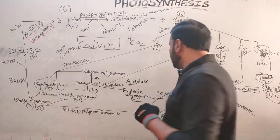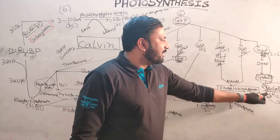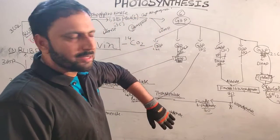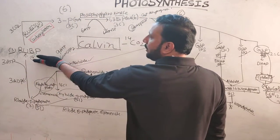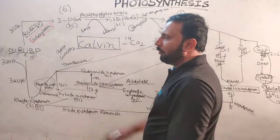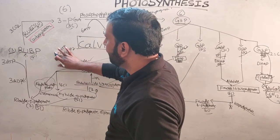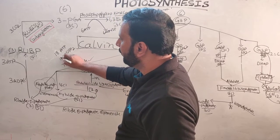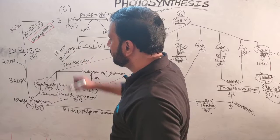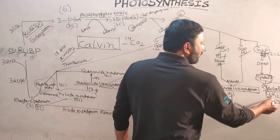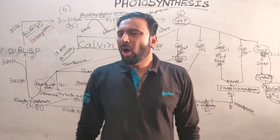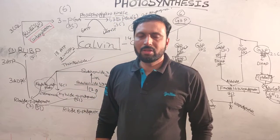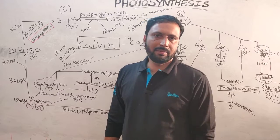For synthesis of one glucose, the entire process must be doubled, meaning six RuBPs are required. When doubled, 18 ATPs are required and 12 NADPH2s are required. So for synthesis of one glucose in the C3 pathway, 18 ATPs and 12 NADPH2s are required. This completes the C3 pathway.